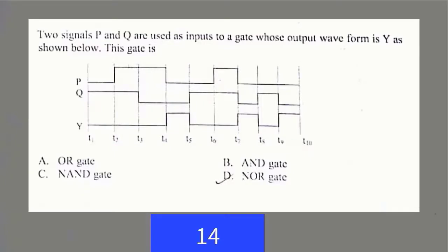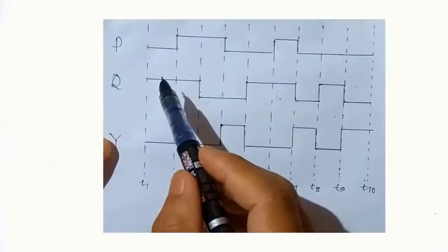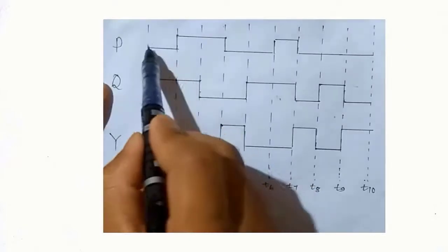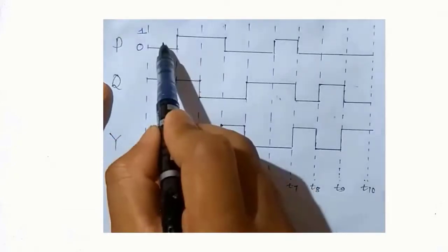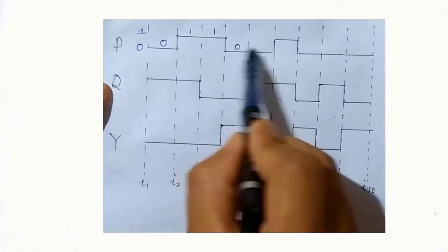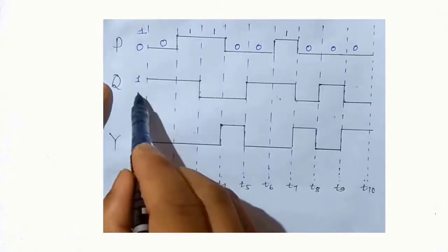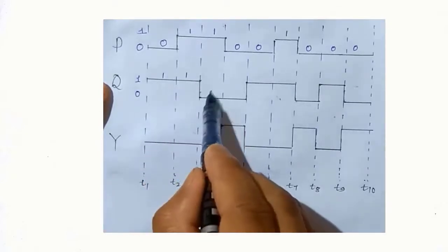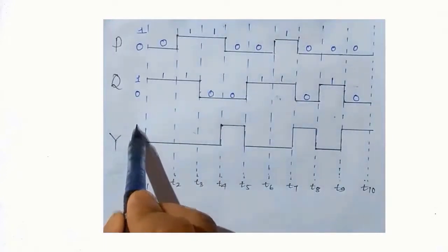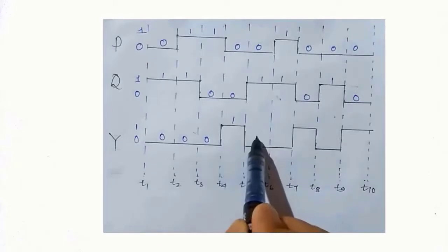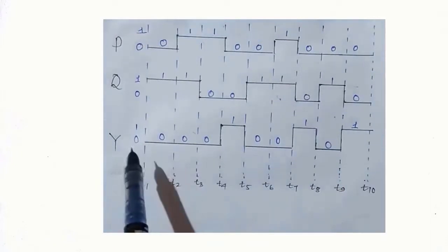This question is from the electronics part. Two signals P and Q are used as inputs to a gate whose output waveform is Y. We have to identify the gate. Let us understand this waveform: the upper level is the one-state and the lower level is the zero-state. Reading the waveform for P: 0, 1, 1, 0, 0, 1, 0, 0, 0. For Q: 1, 1, 0, 0, 1, 1, 0, 1, 0. And for Y: 0, 0, 0, 0, 1, 0, 0, 1, 0, 1.